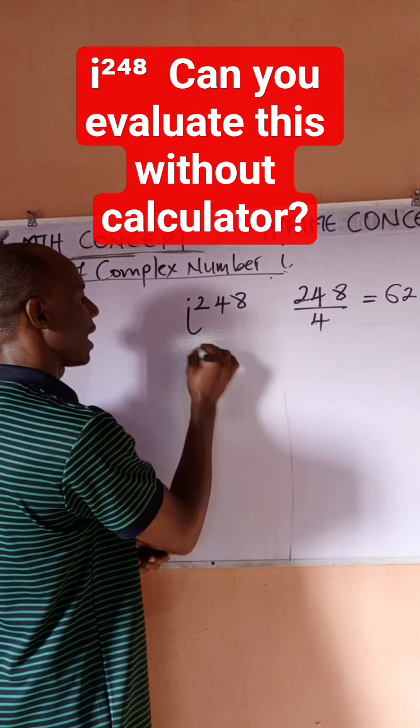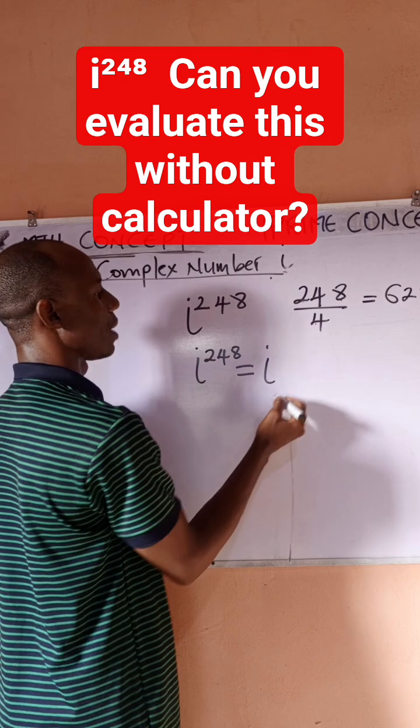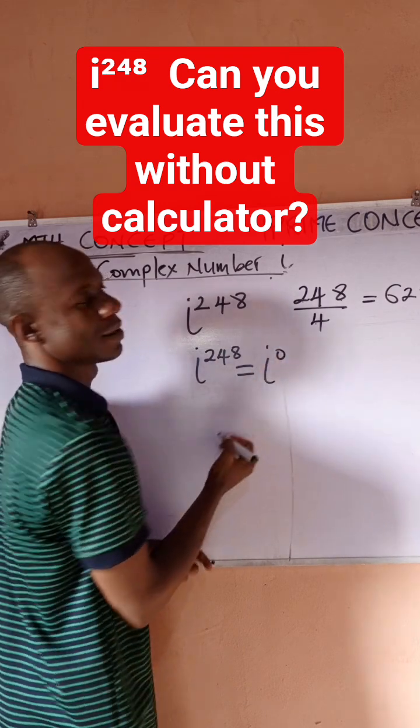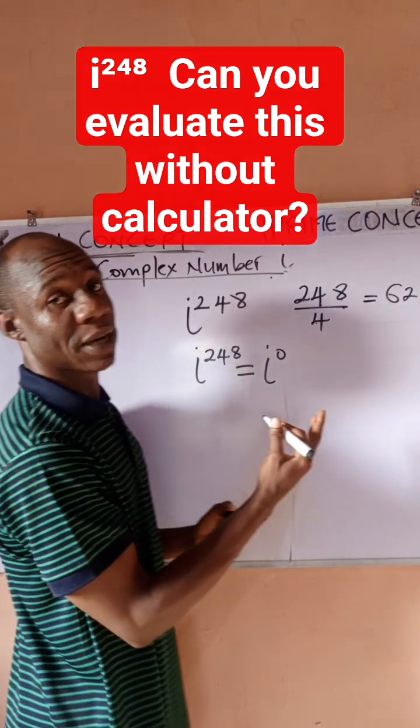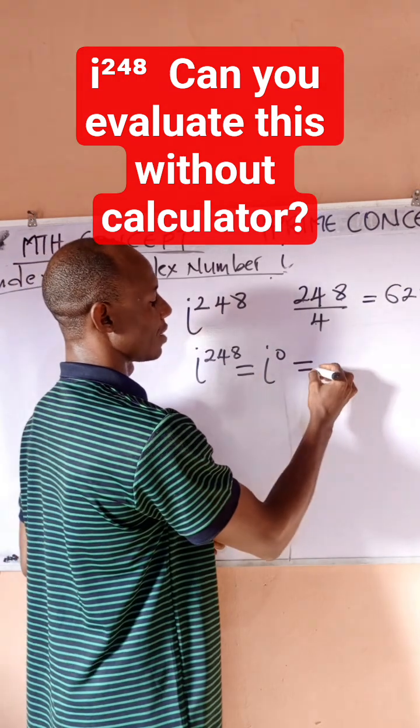And then we can apply what we know from indices. i to power 0 we can call 1. So what it means is that i raised to power 248 would be equal to 1.